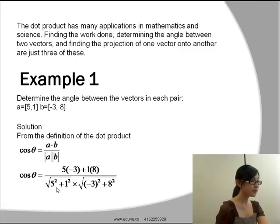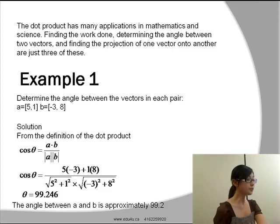To find the magnitude, we have to use the Pythagorean theorem. The magnitude of a will be square root of 5 squared plus 1 squared, and the magnitude of b will be square root of negative 3 squared plus 8 squared. When we type that into the calculator, we will get the angle is equal to 99.246. Therefore, the angle between vector a and vector b is approximately 99.2 degrees.